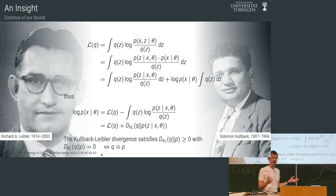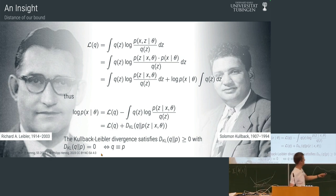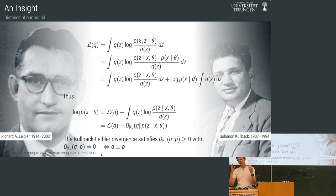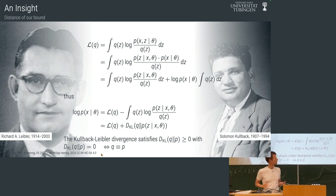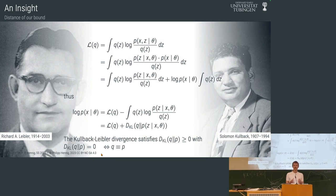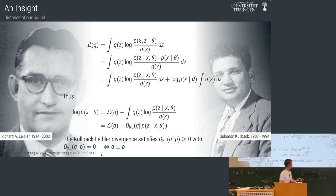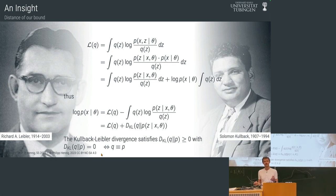For any distribution q with full support we get a lower bound, but if we choose q = p(z|x, theta), we get exactly the correct number at that point — the bound is tight, so the inequality becomes an equality. Why is that? This is where the other bit of annoying math comes in, involving Kullback and Leibler — KL divergence.